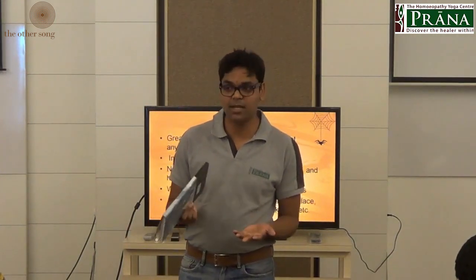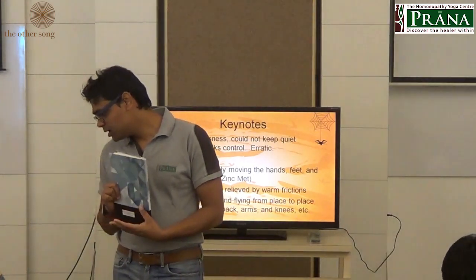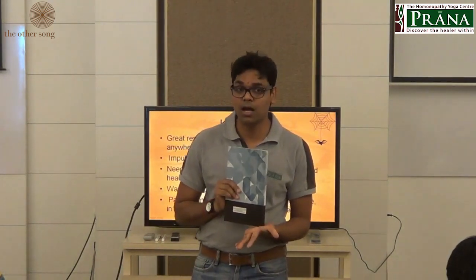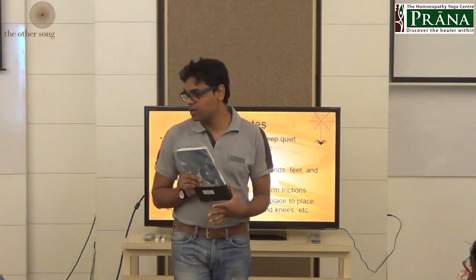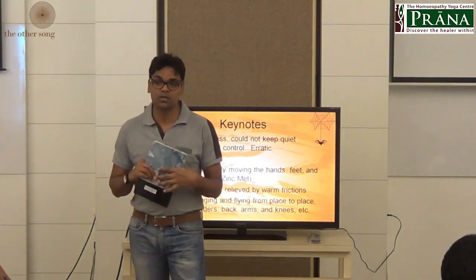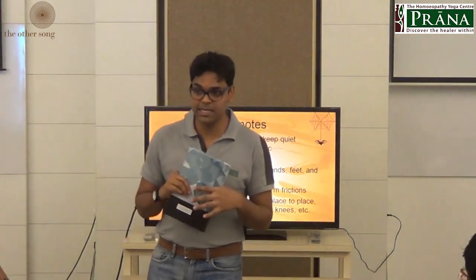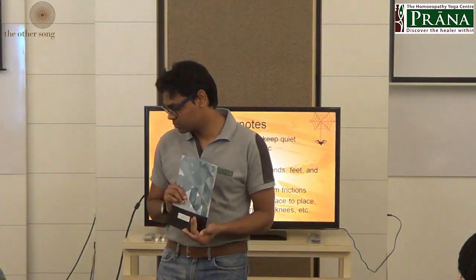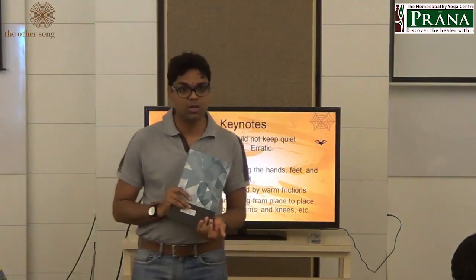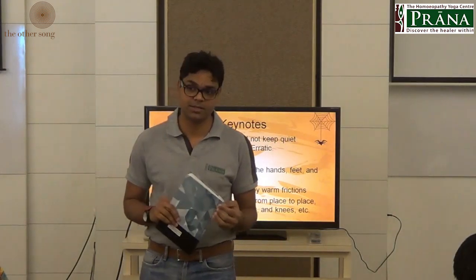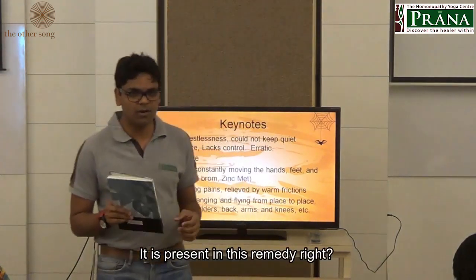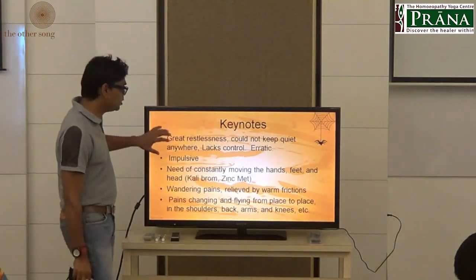Next: Pulsatilla — wandering pains, and the gentle, mild character. Kalmia: what is the character? It has strong heart affection — descending pains, pain going downwards, alternating with heart complaints, with very low heart rate — 45-50, 35-40. Low heart rate.